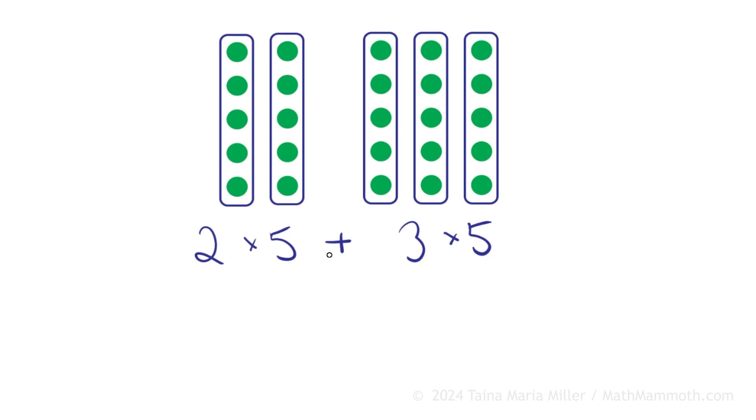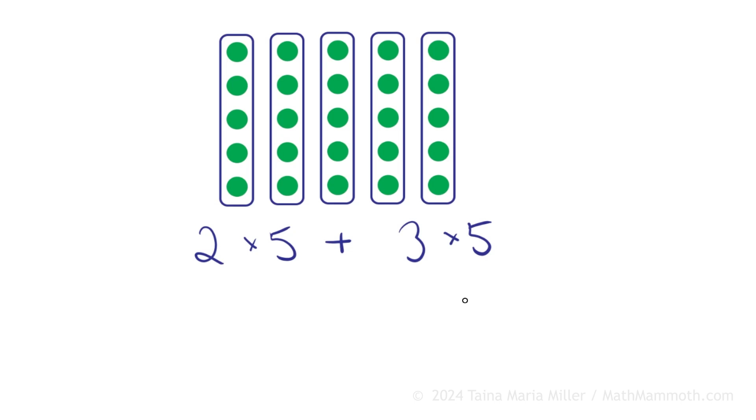And now we have a shortcut so to speak. What if we now push all of these groups of five together and make a big array? So now we have actually five groups of five. Five times five.